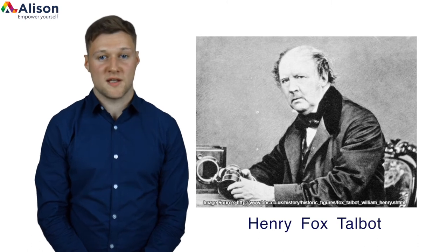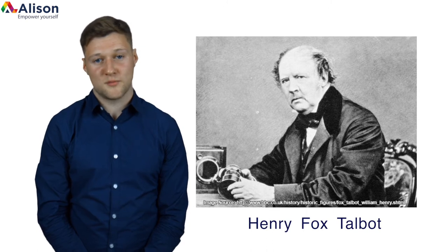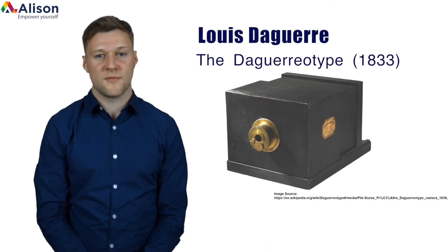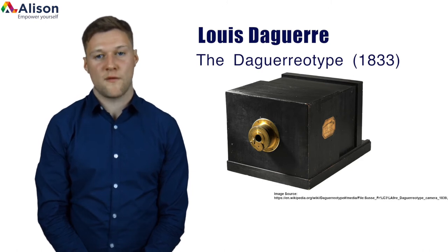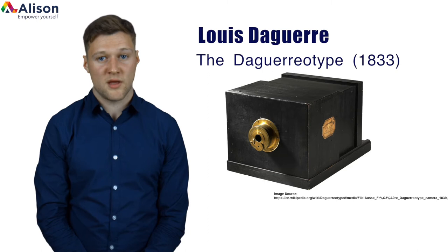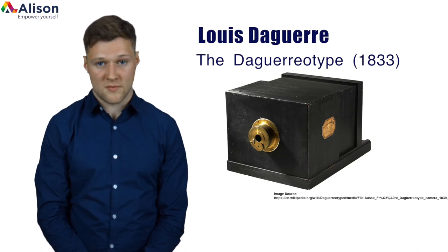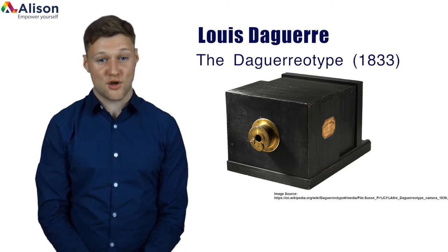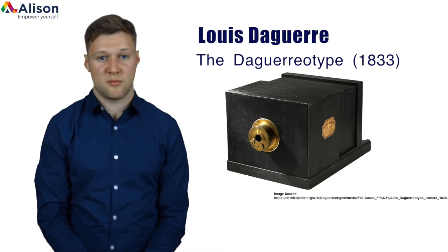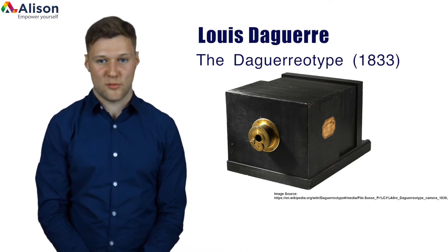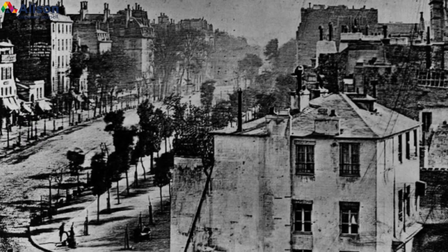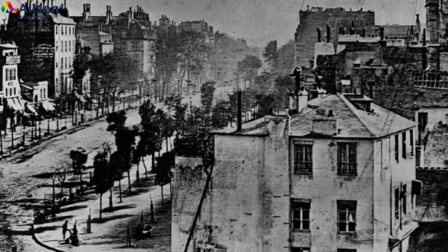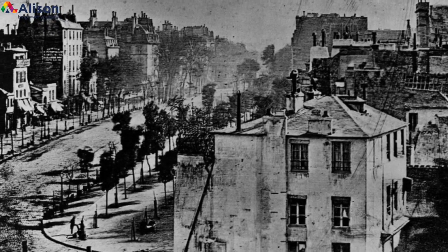Fox Talbot also conceived the two-step negative-positive procedure still used in most non-electronic photography up to the present day. Louis Daguerre had created the first practical photographic process with the aptly named daguerreotype in 1833, and in 1839 the French government purchased the daguerreotype, opening access to the public. The process produced highly detailed photographs onto silver-sheeted plates of copper.